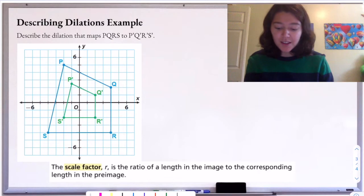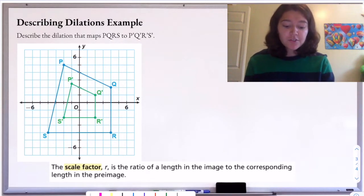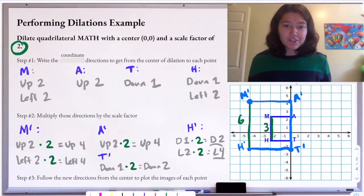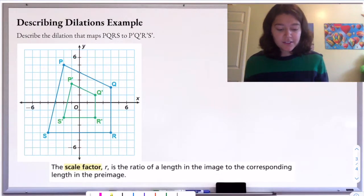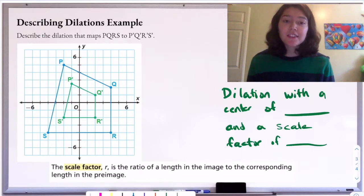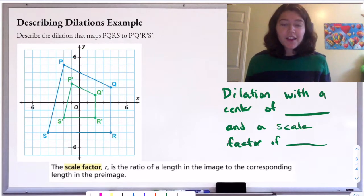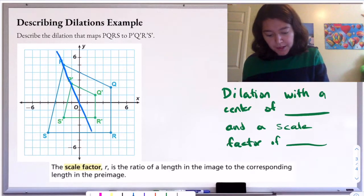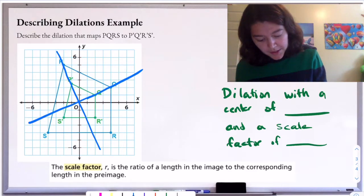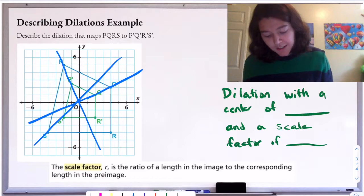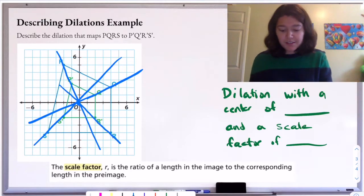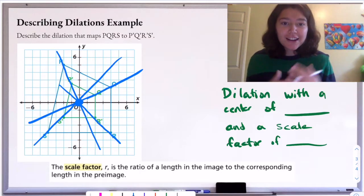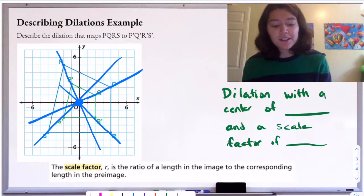Now we have a describing dilations example: describe the dilation that maps PQRS to P'Q'R'S'. To describe a dilation, we're going to need a center and a scale factor. To find the center of dilation, we take corresponding points and draw a straight line connecting them — we do that for each pair of corresponding points and they should all meet at one point, which is the center. Connecting P to P', Q to Q', S to S', and R to R', we can see that the origin is the only point all four lines share, so it's the center of dilation.